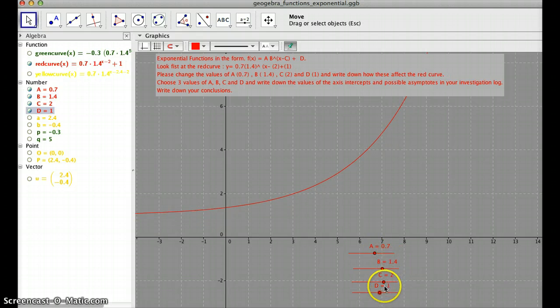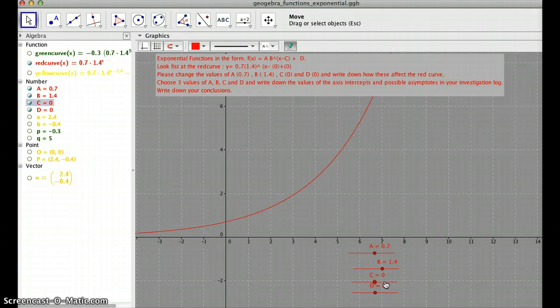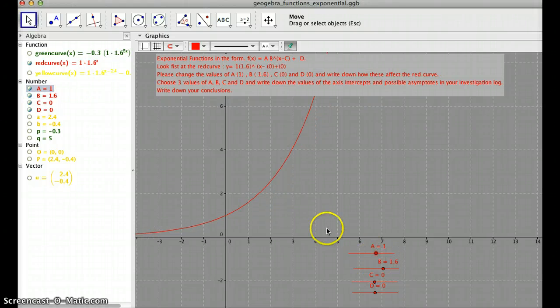You might want to set up values of d, for example, zero, and c the same, c zero, before you start changing the values of a or even b. This might make things easier. But that is up to you. A, for example, you can set it up to 1 and then change b.